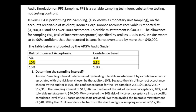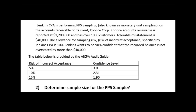To recap: the sampling interval was the $40,000 tolerable misstatement divided by the 2.31 confidence level, which matches the chosen risk of incorrect acceptance of 10%. $40,000 divided by 2.31 gives the sampling interval of $17,316. That sampling interval is a function of the risk of incorrect acceptance and tolerable misstatement — we converted the 10% risk into the confidence level of 2.31 provided by the AICPA audit guide.